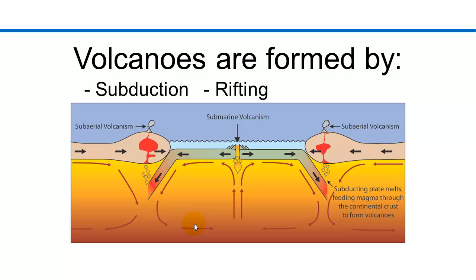Volcanoes can be formed in three ways. The first way is through subduction. The subducting plate, in this case an oceanic plate,